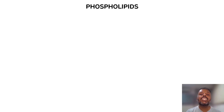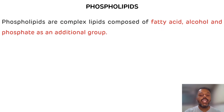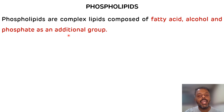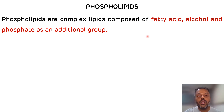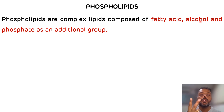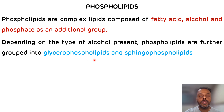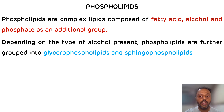Phospholipids are complex lipids which are composed of fatty acids, alcohol, and phosphate as an additional group. Depending upon the type of alcohol present, phospholipids are classified into two categories: first, glycerophospholipids, which contain glycerol as an alcohol, and second, sphingophospholipids, which contain sphingosine as an alcohol. We will discuss glycerophospholipids and sphingophospholipids with their examples.